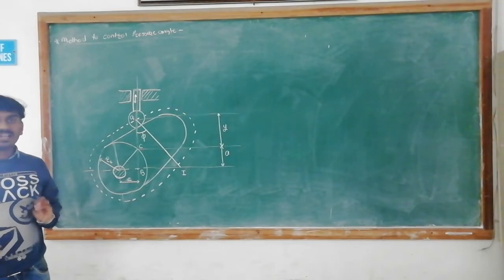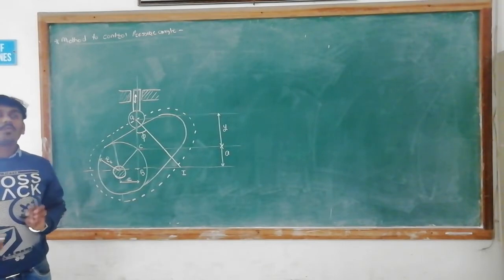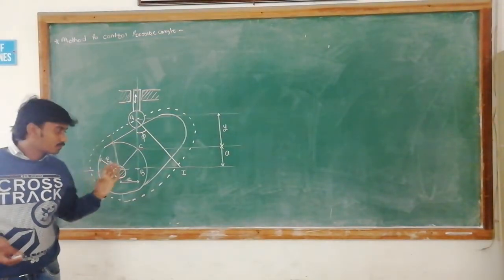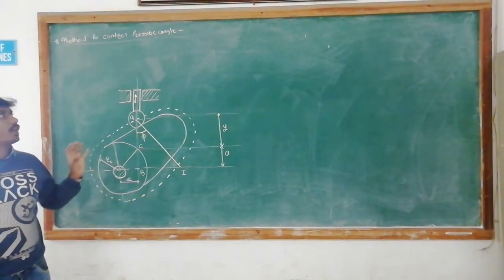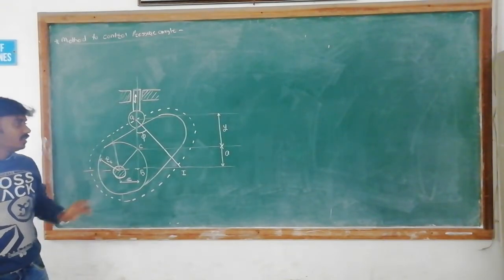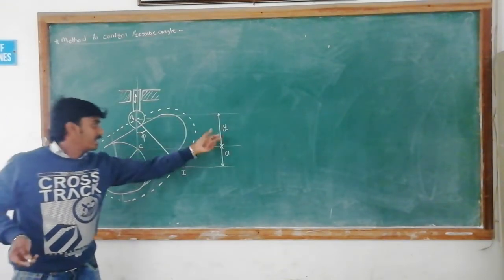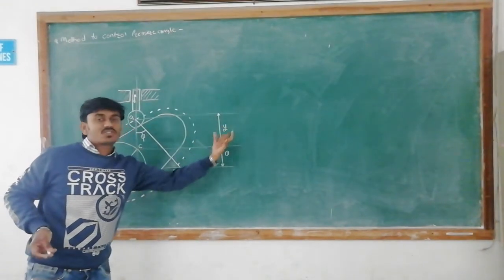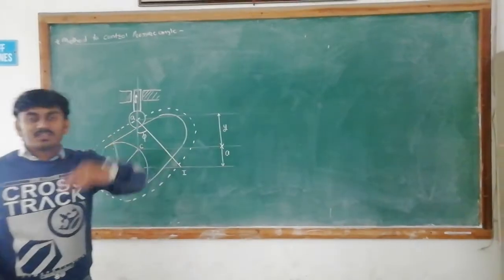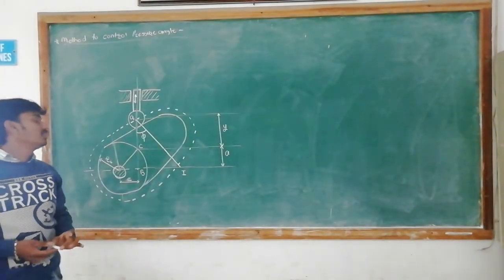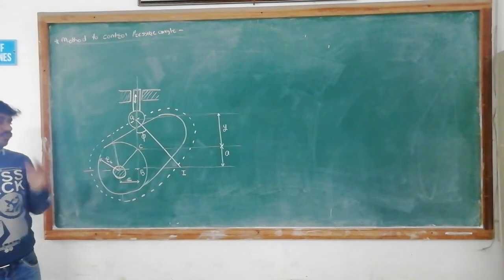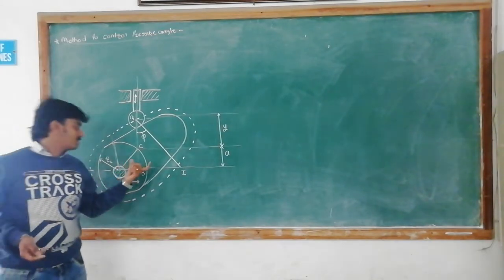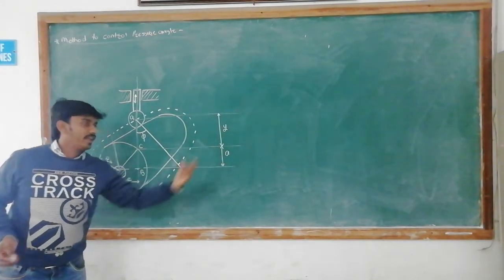We have to find out how we can reduce or control the pressure angle. Here y is called the lift of the follower — we have to know that y is the lift of the follower. And this vertical distance is called the base.